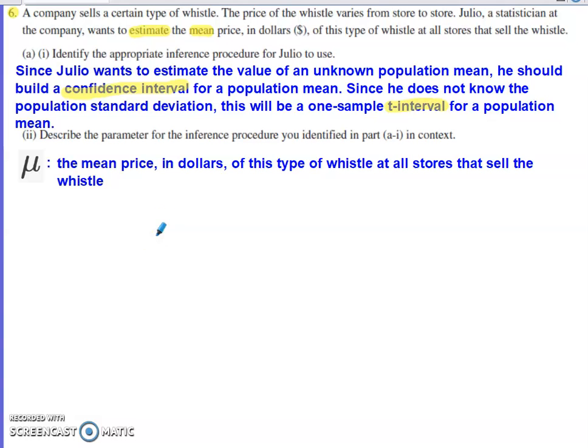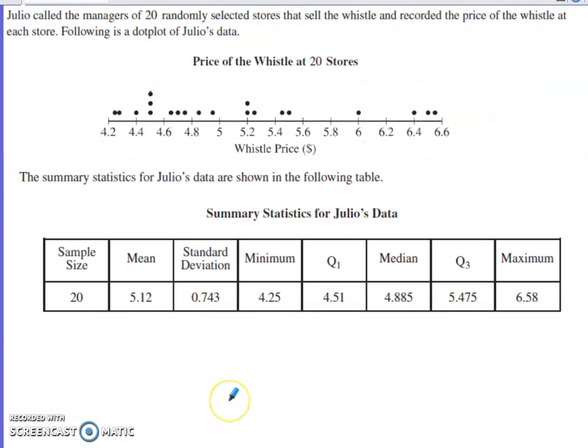Part two of part A asks us to describe the parameter for the inference procedure that we identified in part A, part one of part A. And this is an unknown population mean, so it is going to be represented by the Greek letter μ. And μ is going to be the mean price measured in dollars of all the stores that sell this whistle. Before part B, they present us with a little bit of information. They tell us that Julio calls 20 randomly selected stores. And we have a dot plot representing the price of the whistle at these 20 stores and some summary statistics for those 20 selected stores for the price of this whistle.